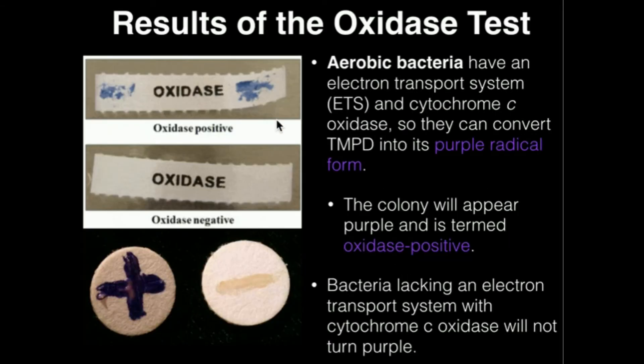Here are some specific results. It's actually quite a pretty dark purple that we're going to see. This up here is an oxidase positive result — we clearly see this purple color change. In the oxidase negative result, there is no color change whatsoever; in fact, if it dries, you won't even be able to see it.